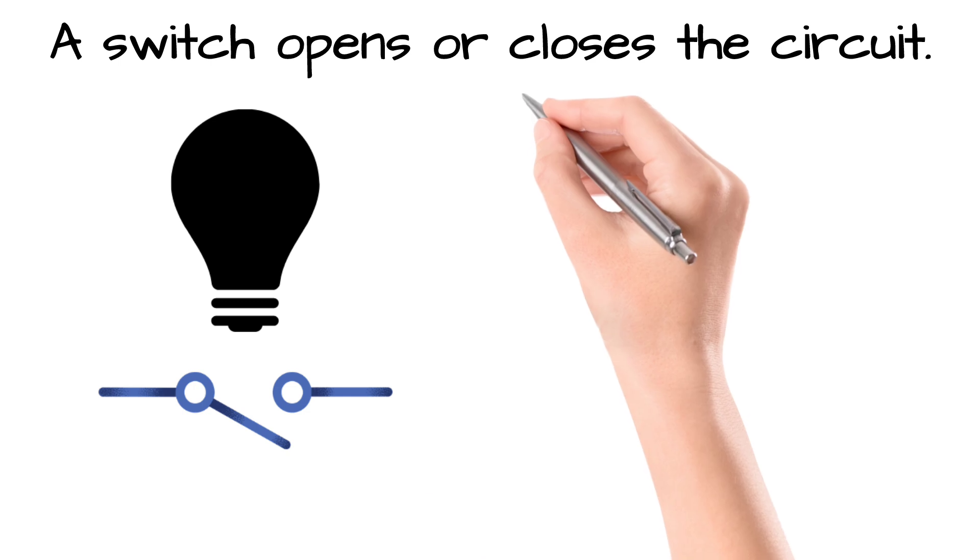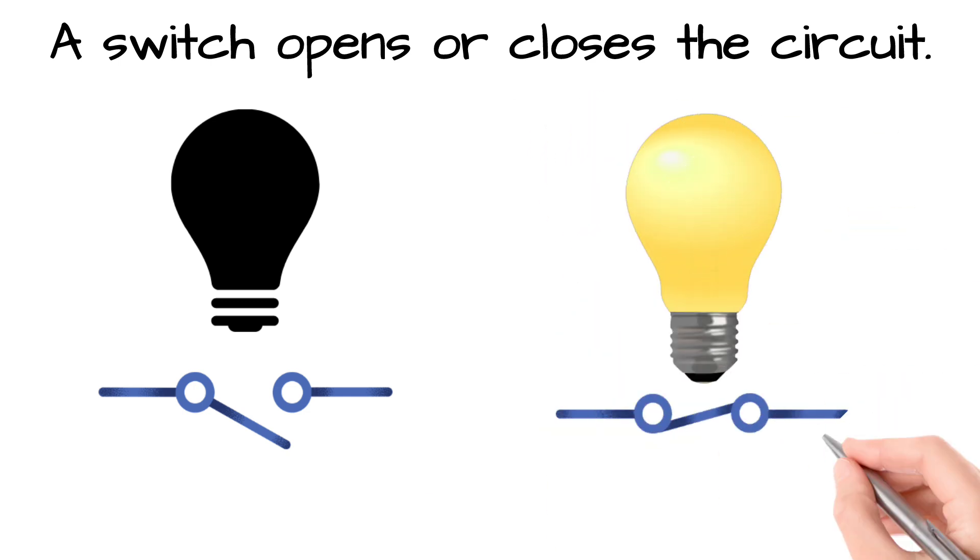When it's open, the path is broken and no current can flow. When it's closed, the path is complete and electricity moves freely, allowing the bulb to work.